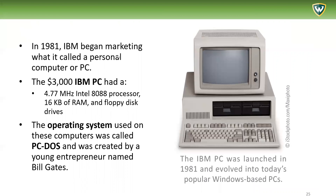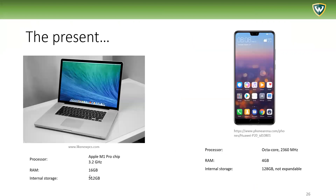In 1981, IBM began marketing what it called a personal computer, or PC, similar to the first Apple computer. The operating system was PC DOS, created by a young entrepreneur named Bill Gates, who founded Microsoft. Microsoft developed the Windows operating system and was initially focused on the software and operating system side. Nowadays we have super fast and advanced machines — handheld, laptop, and supercomputers — with technologies that are like 1 million times faster than before, which is quite amazing.